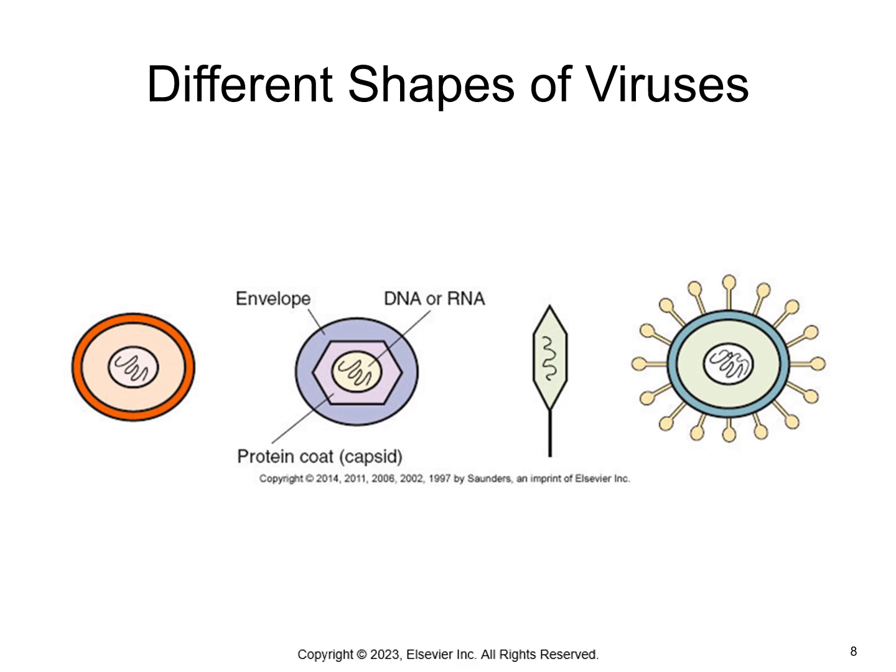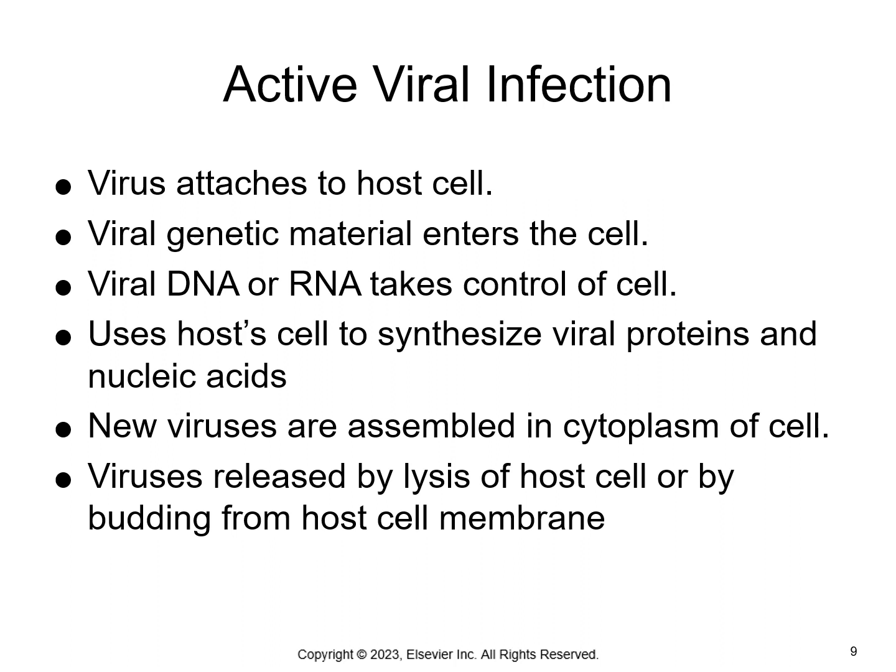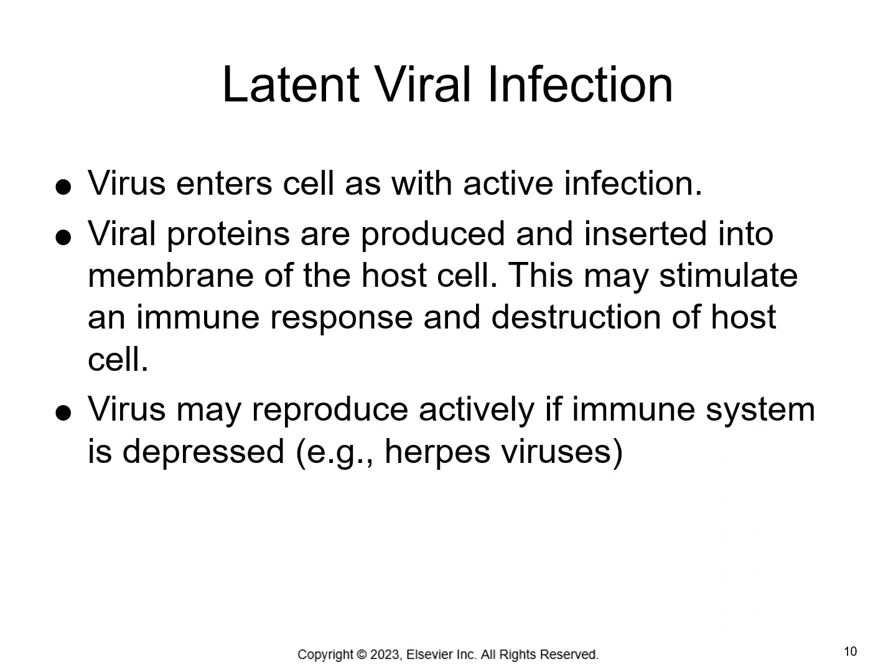This is an illustration of different shapes of viruses. When a virus infects a person, it attaches to a host cell and the viral genetic material enters the cell. The viral DNA or RNA takes control of that cell, and the virus replicates by using the host cell to produce and assemble its components. It uses the host cell to synthesize, then destroys the host cell — this is called lysis — and the new virus infects the nearby cells.